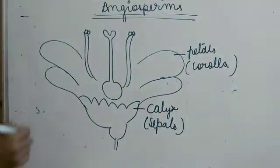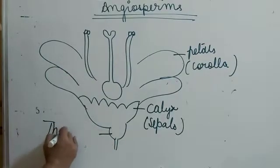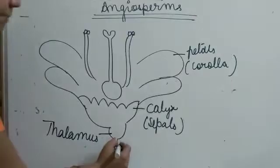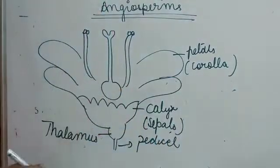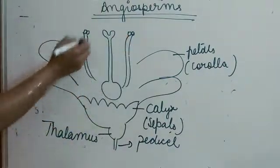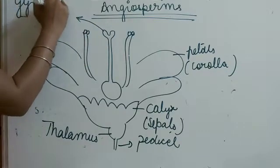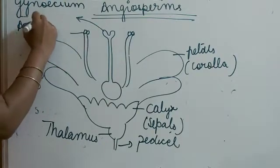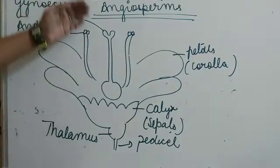This is the flower. It has petals and sepals. This is the supporting structure which is the thalamus. Apart from the thalamus, there is a pedicel which is the flower stalk. The center has the important female part which is the gynoecium, and the male part which is the androecium. This is the typical flower.